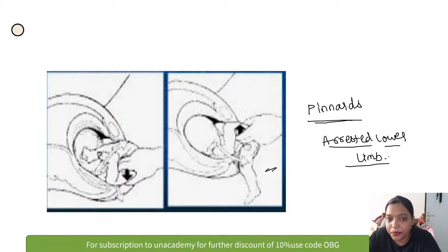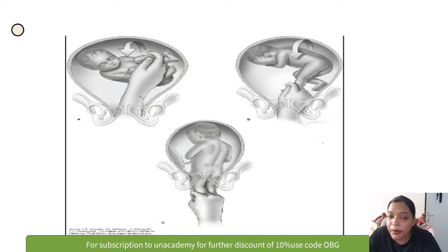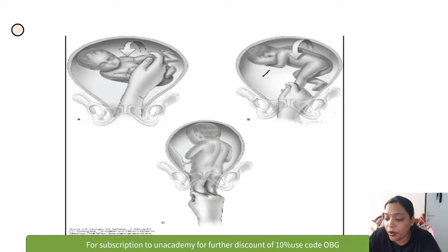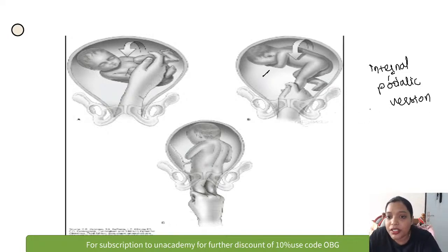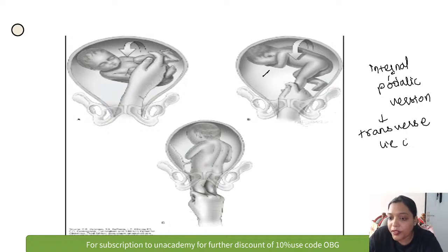In the next image, you hold the baby's leg and pull it out — unlike Pinard's which used the popliteal fossa, here you hold the leg directly. This is called internal podalic version, done for transverse lie of the second twin.